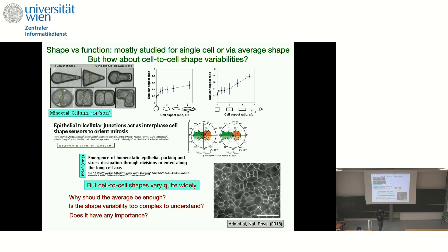It has been shown that there is a correlation between average cell shape and division, division plane orientation, differentiation, etc. So what we are trying to describe is a theory for morphogenesis. We need both division, division plane orientation, and apoptosis, and the question we are exploring is: can we use cell shape as a proxy for function and develop an analytical theory in terms of cell shape?